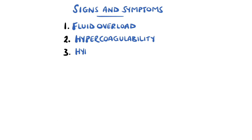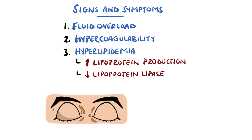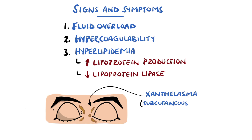Hyperlipidemia is also a feature. The liver is stimulated to produce more proteins, and therefore more lipoproteins are also produced. However, due to the protein-deficient state, there are fewer lipoprotein enzymes available, and so fewer enzymes to break down the lipoproteins. This hyperlipidemia can manifest as xanthalasma, which are deposits of cholesterol under the skin, most typically around the eyes.